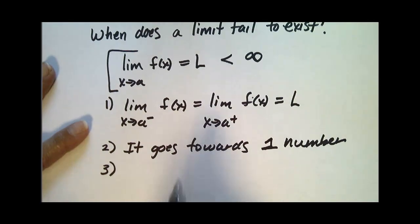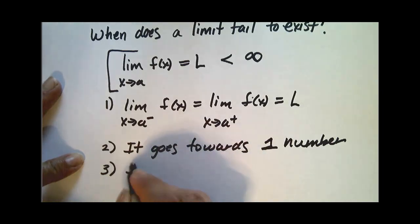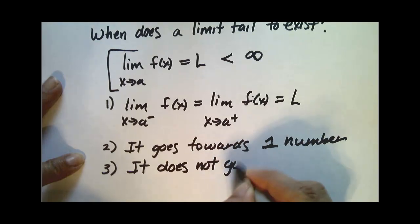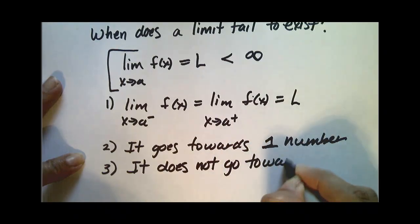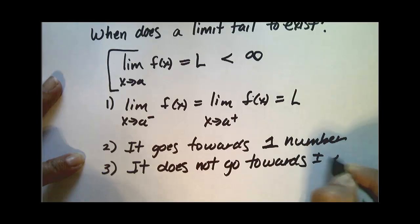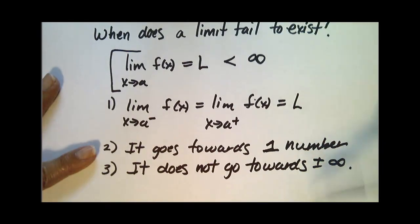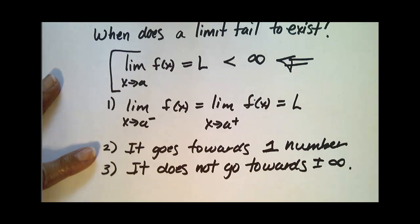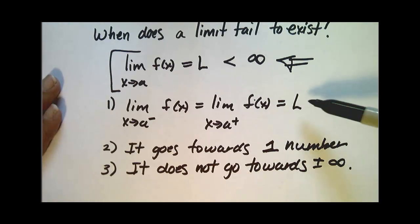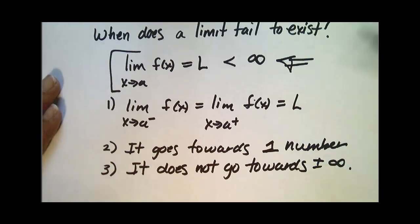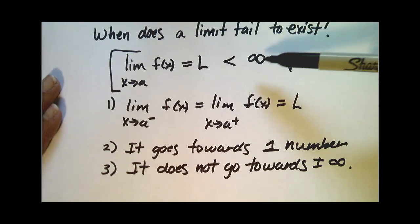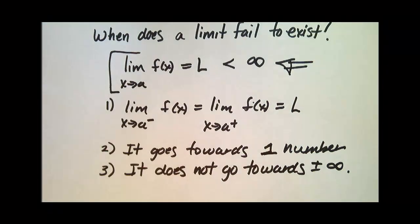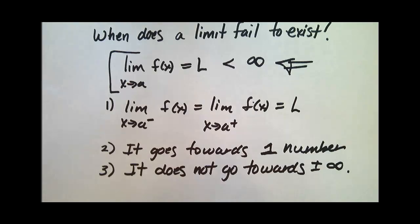And lastly what it says is it does not go towards plus or minus infinity. So all those three statements are actually embedded in this one big statement up here. If one of these conditions is not met, then that would imply that this limit of f as x approaches a does not exist. So let's go ahead and look at some examples where these conditions are not met.